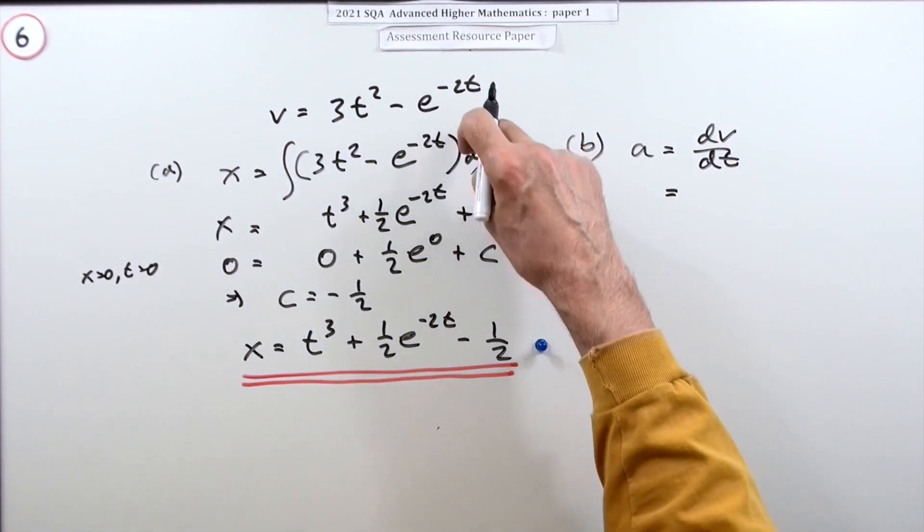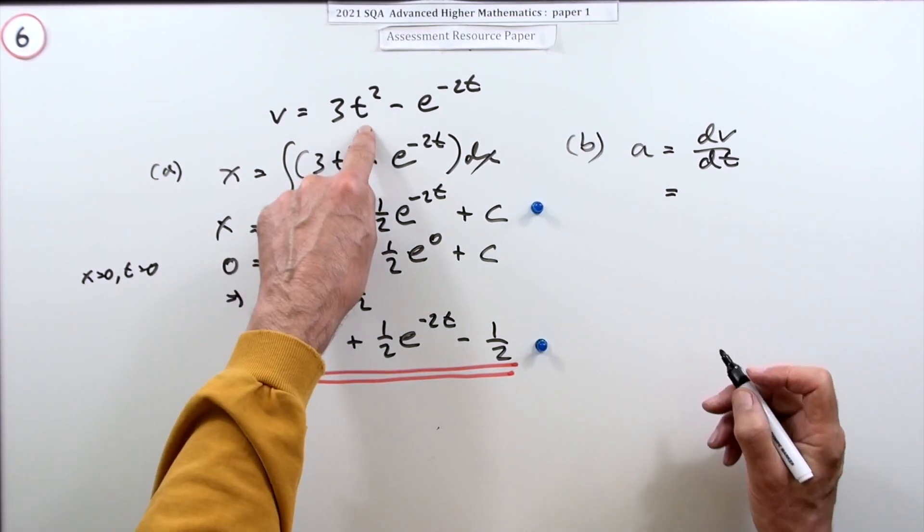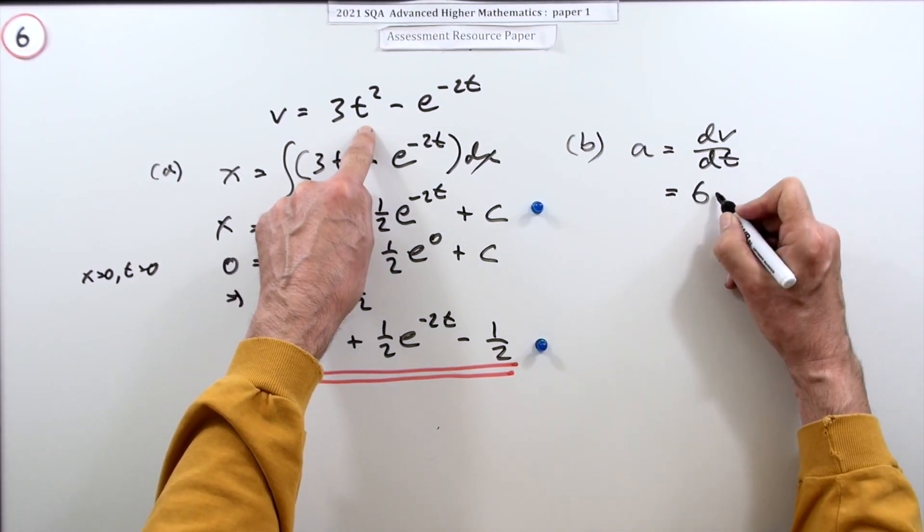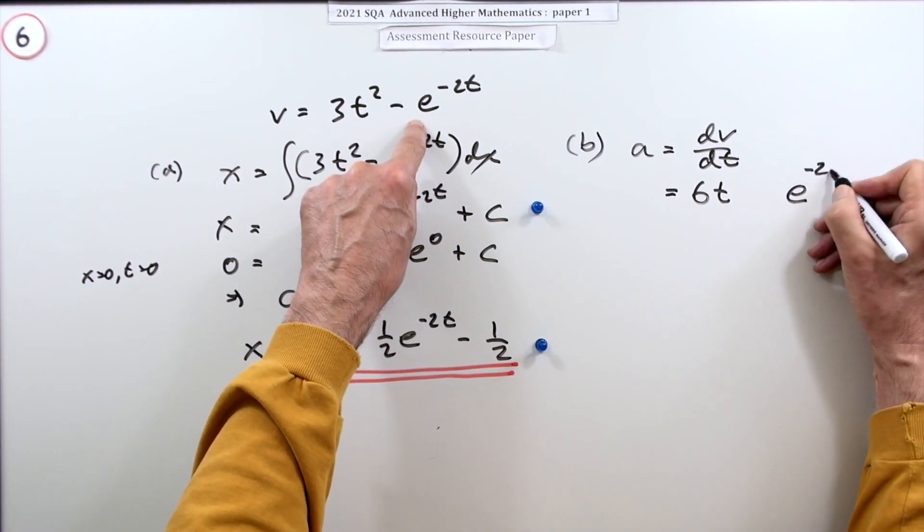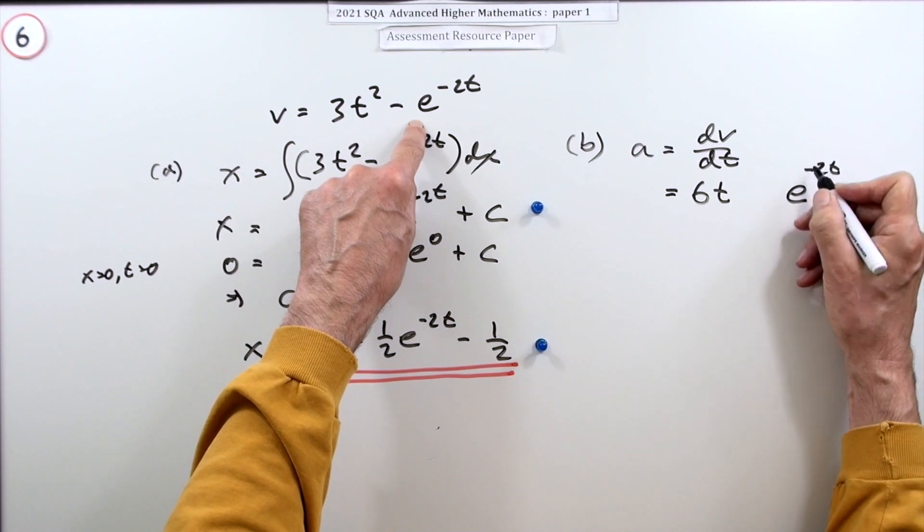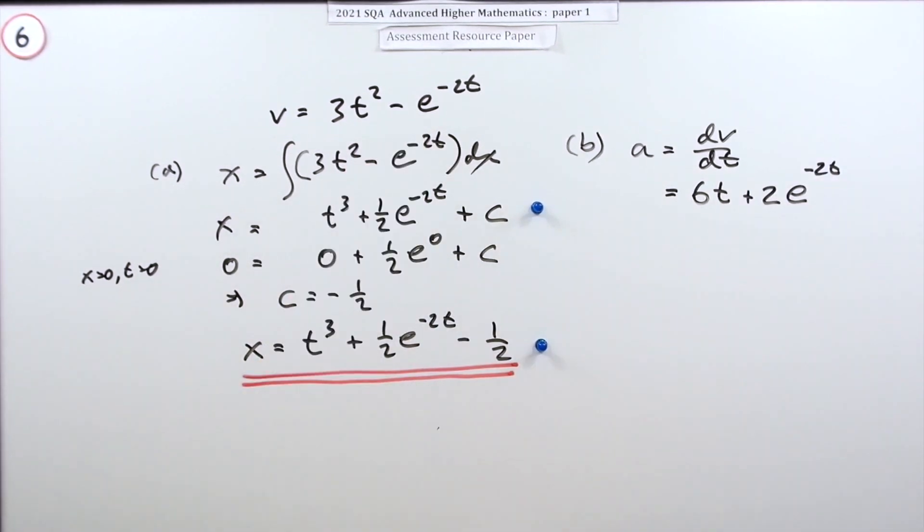Differentiating that: multiply by the power 6, take one off the power t. Differentiate this - stays the same except it's multiplied by the inner derivative, so that makes it a plus 2e. Doing that gets a mark.